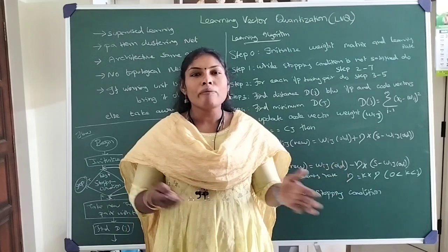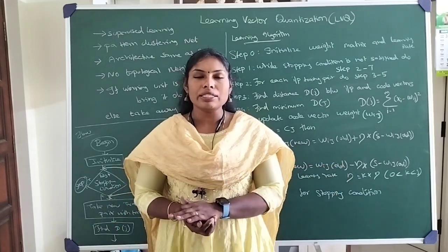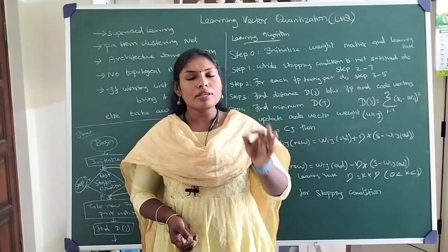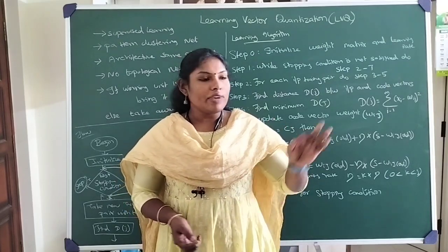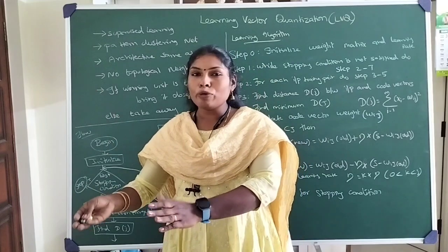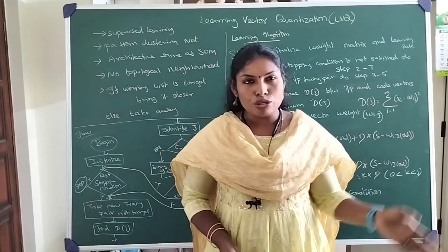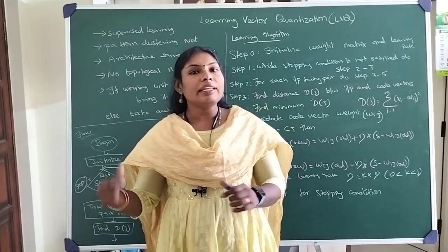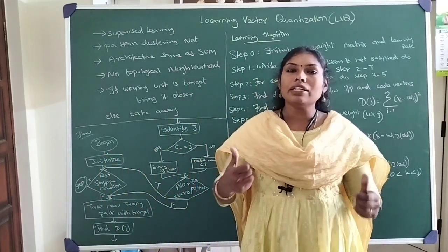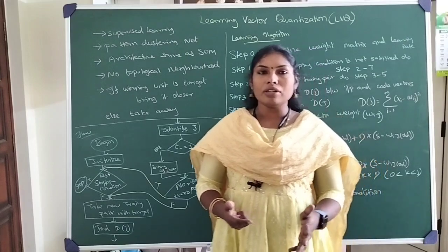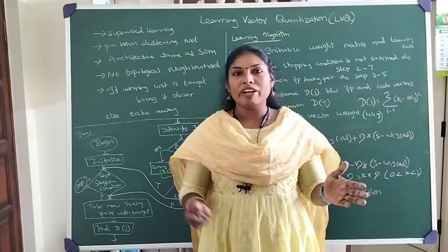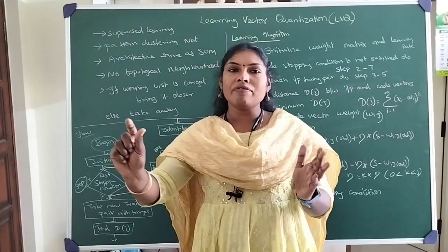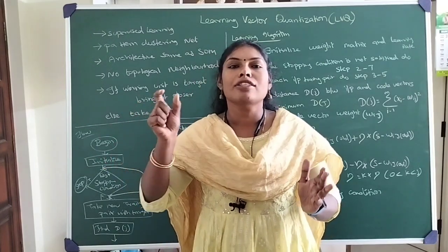The difference between SOM and Learning Vector Quantization is that Learning Vector Quantization is totally a supervised learning model. We exactly know that for this input pattern, this is the cluster it belongs to. SOM, on the other hand, is an unsupervised learning model. Here we follow the process of winner takes all — it is a competitive network. We conduct competition between all the clusters for the input pattern, and whichever is the winning unit, winner takes all.